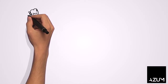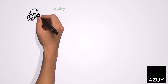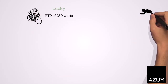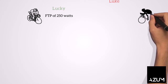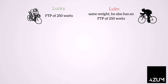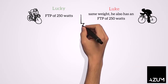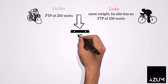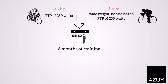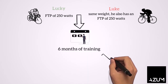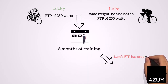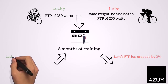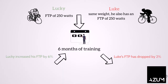This is Lucky. He has an FTP of 250 watts. This is Luke. He has the same weight as Lucky and also has an FTP of 250 watts. The two of them have been training according to the same training plan for 6 months. Luke's FTP has dropped by 2%, while Lucky's has increased by 6%.